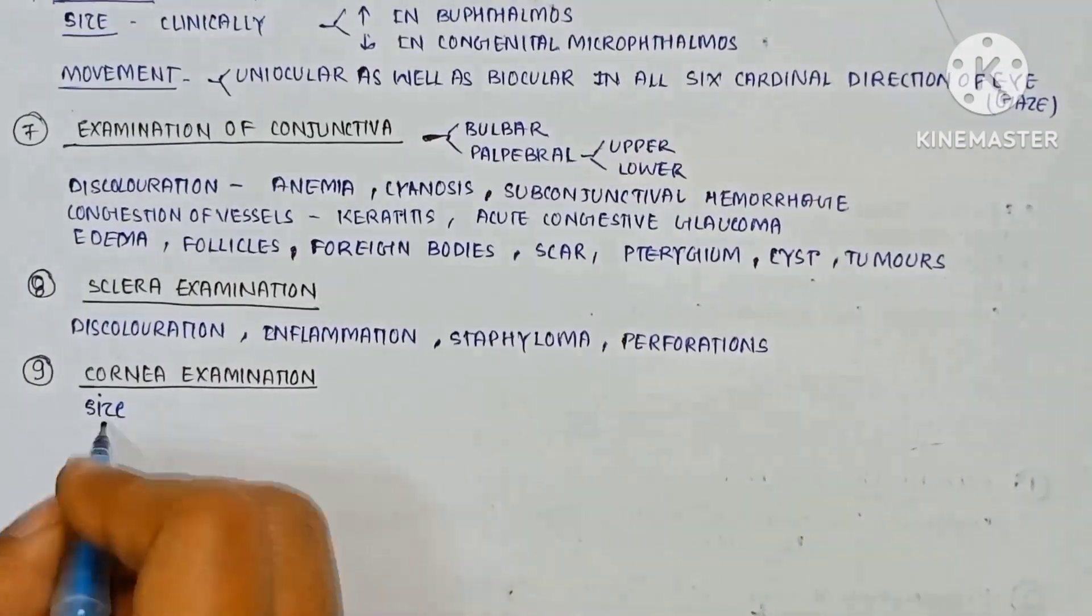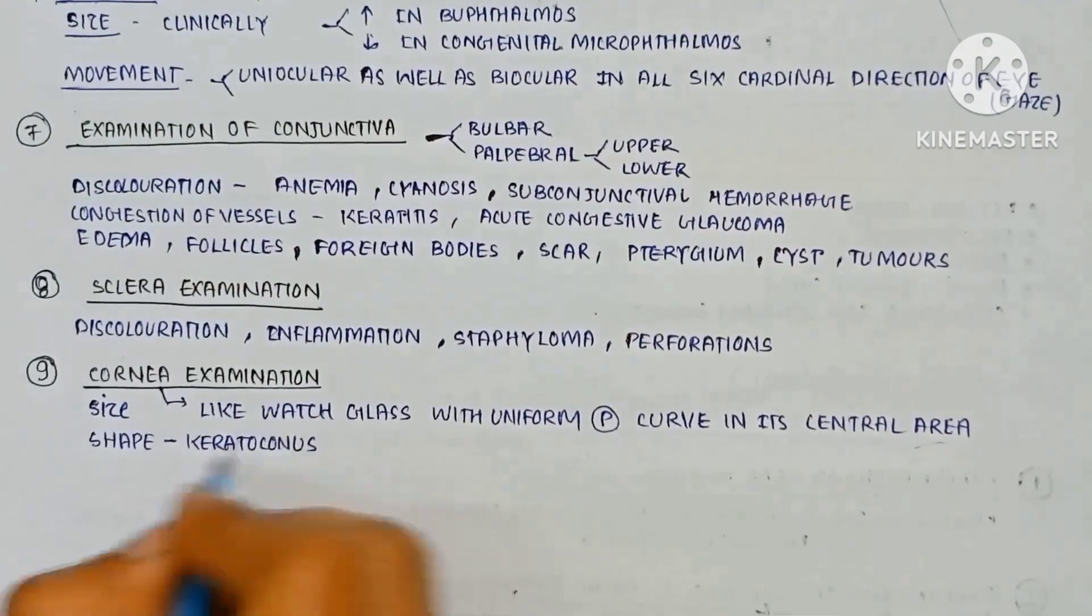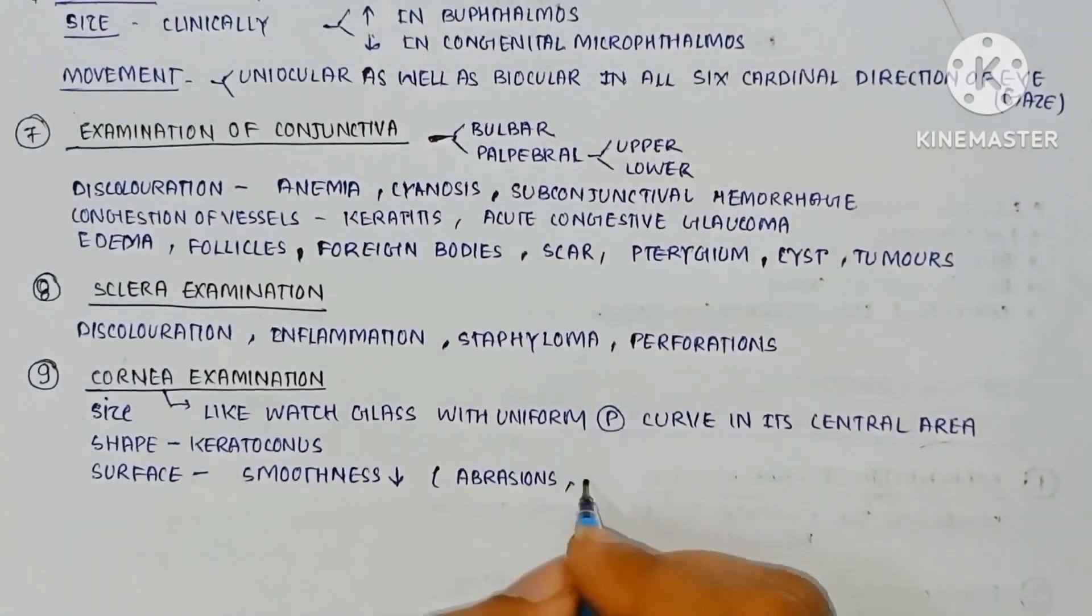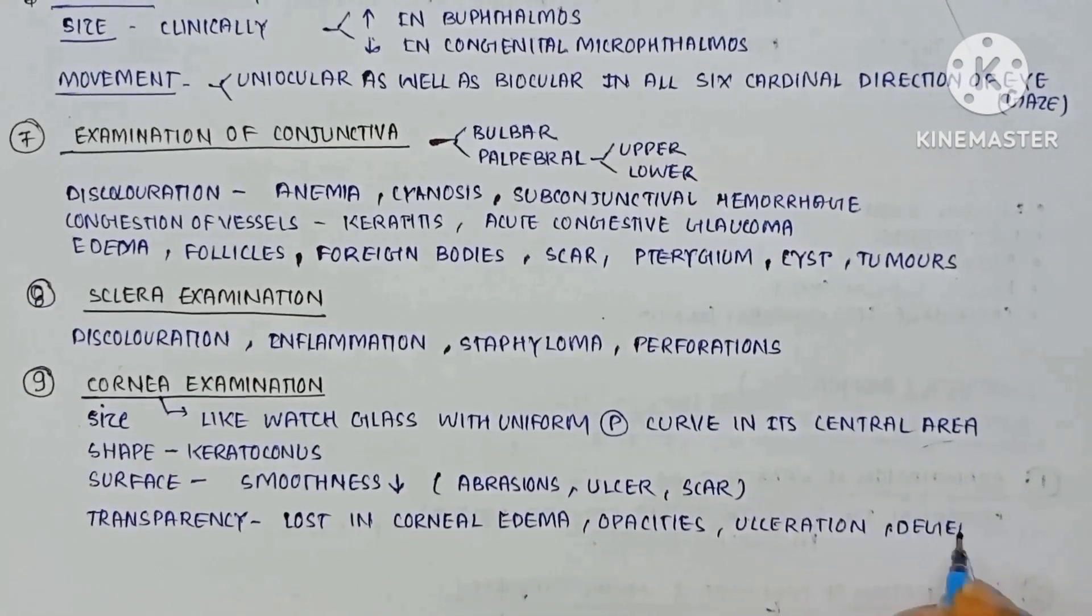The corneal examination. The cornea is like watch glass with a uniform posterior surface in the central area. The shape abnormal in keratoconus. Surface smoothness decreased in abrasion or scar. Transparency lost in corneal edema, opacity, ulceration, degeneration.